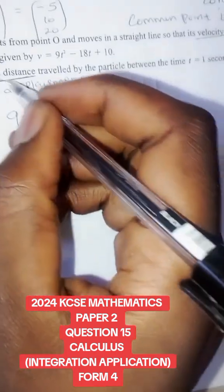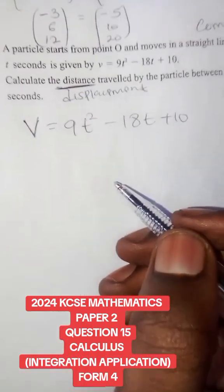The distance traveled by the particle between t = 1 and t = 2. If you have velocity and want to find displacement, you have to integrate.